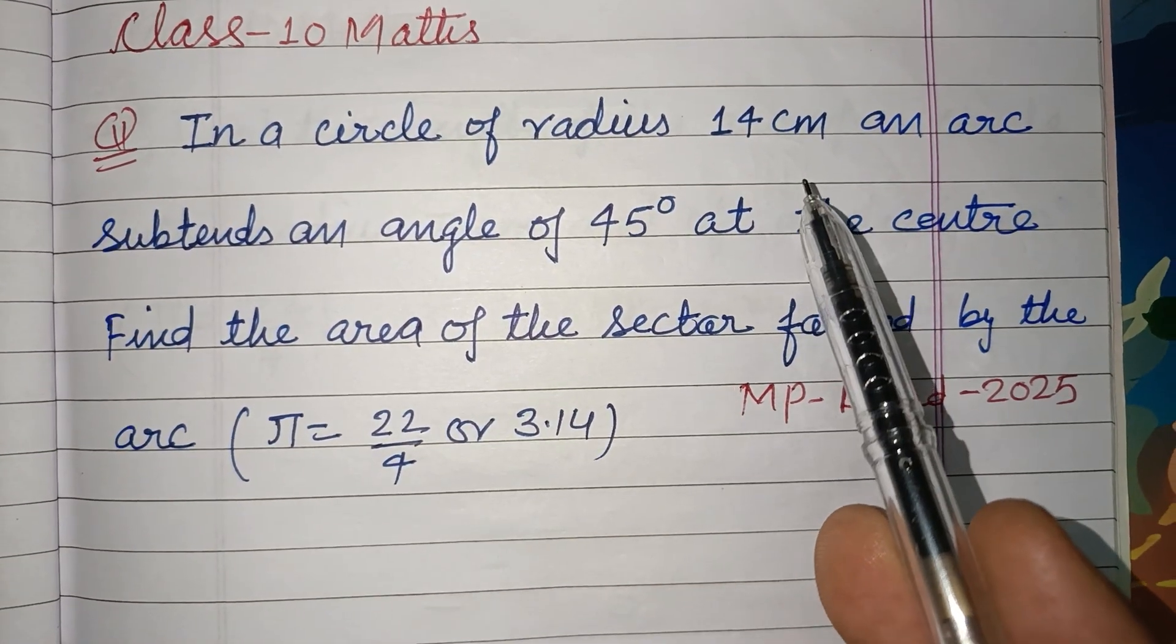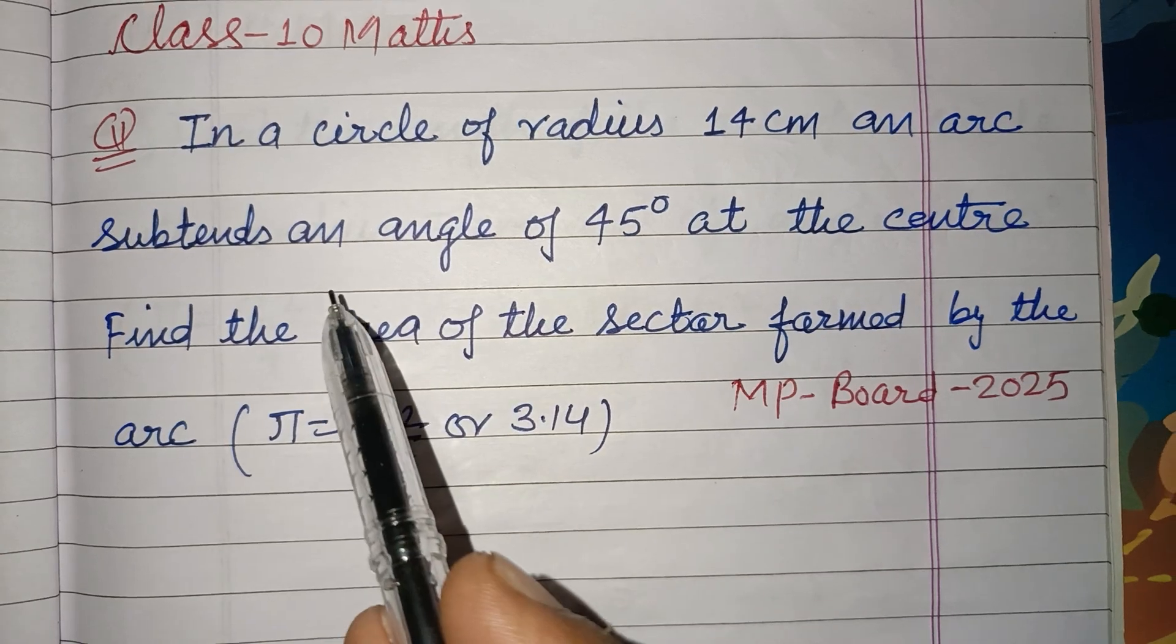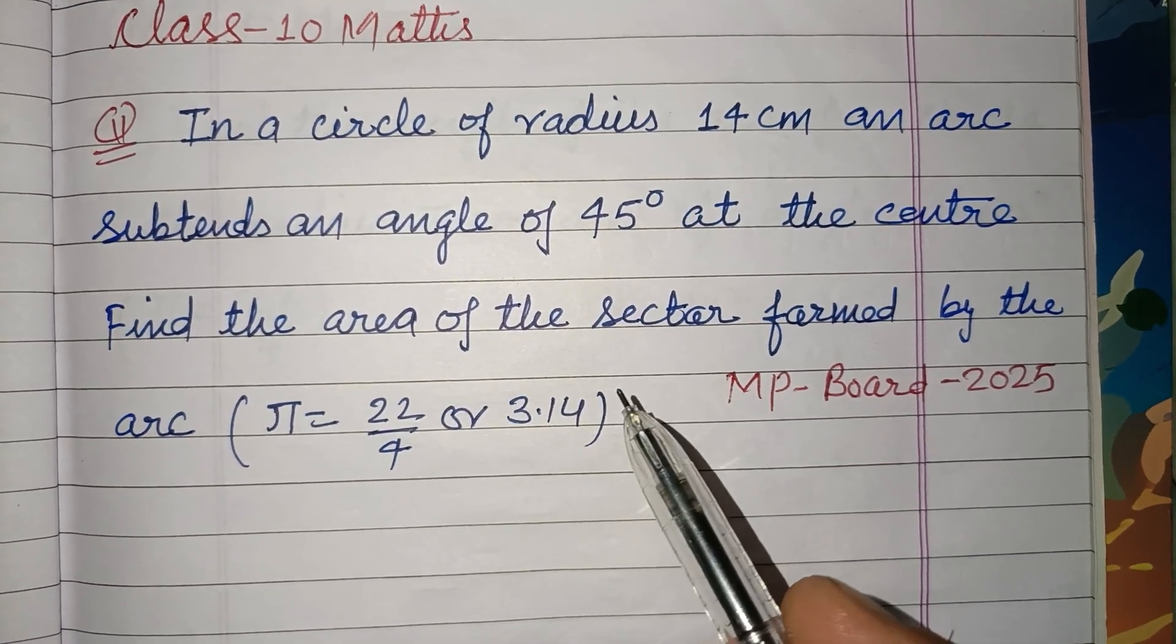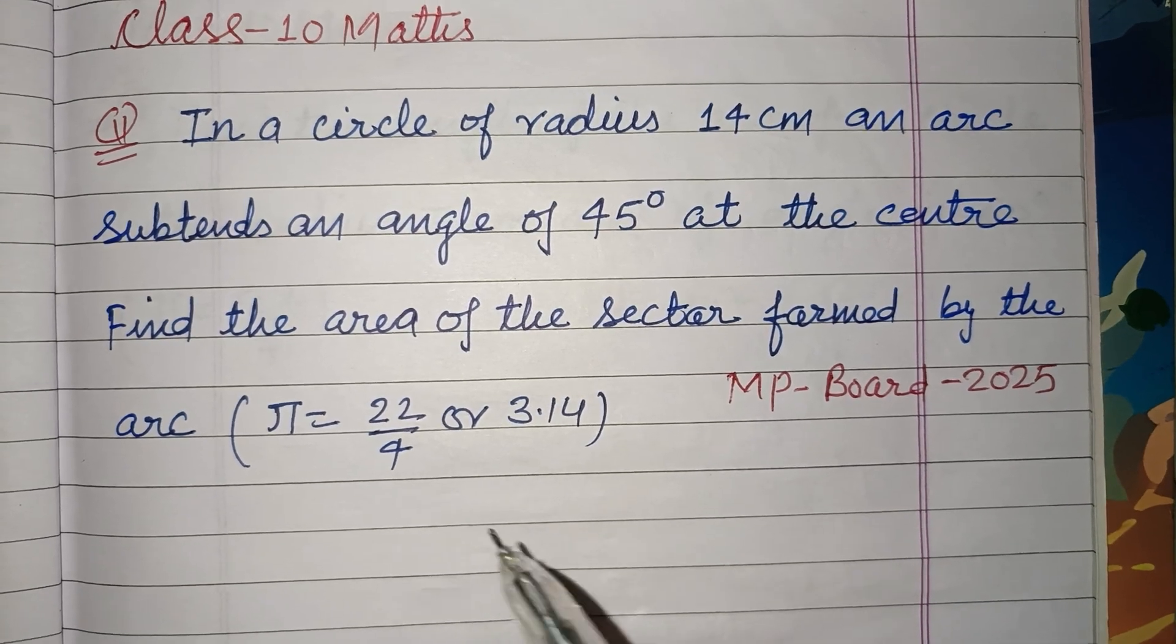In a circle of radius 14 cm, an arc subtends an angle of 45 degrees at the center. Find the area of the sector formed by the arc.